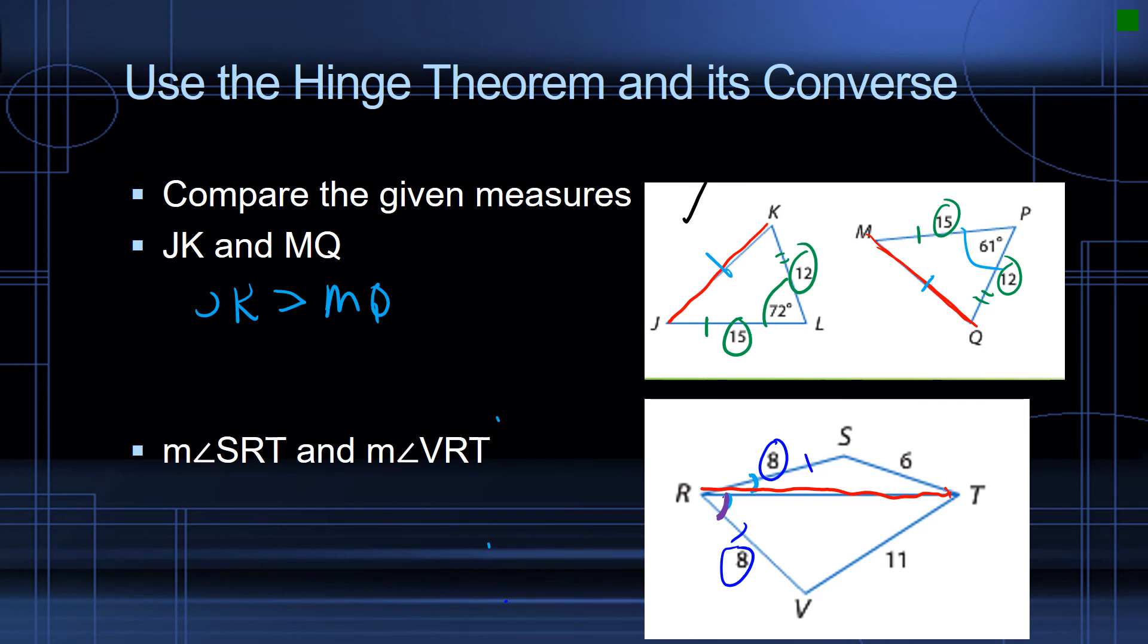So now I'm looking at the sides opposite the angle. The side opposite the angle SRT, I've got a measure of 6. And the side opposite VRT is 11. So is angle SRT going to be less than or greater than angle VRT?